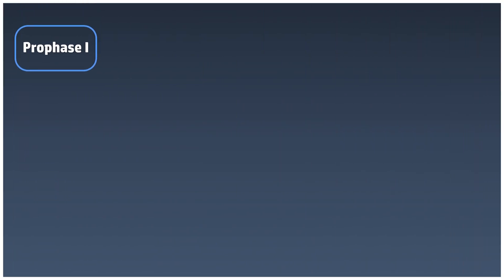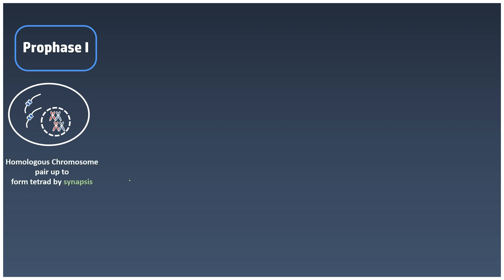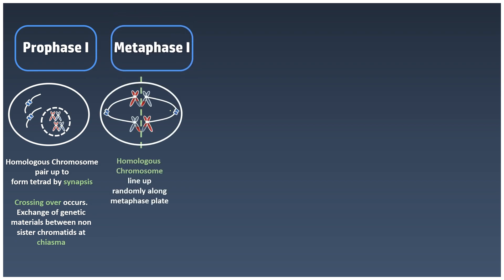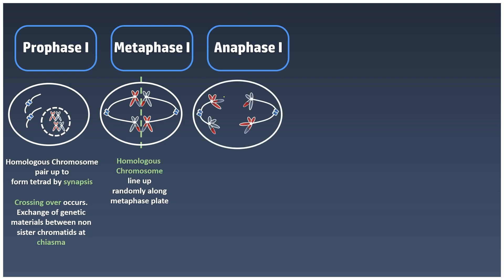As a recap, meiosis begins with Prophase I, where the special feature compared to mitosis is that the homologous chromosomes pair up to form a tetrad or bivalent through the process of synapsis. Crossing over occurs between the non-sister chromatids at a specific location called chiasma. It is followed by Metaphase I, where the pair of homologous chromosomes lines up in the middle of the cell. Anaphase happens when the spindle fiber contracts and pulls the entire chromosomes towards the poles.